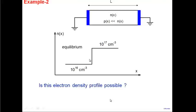Consider a semiconductor with two ideal grounded contacts and no applied voltage — the device is in equilibrium. Holes are negligible, so we consider only electron density. The question is: is it possible for electron density to be 10^16 in one half of the device and abruptly jump to 10^17 in the other half?